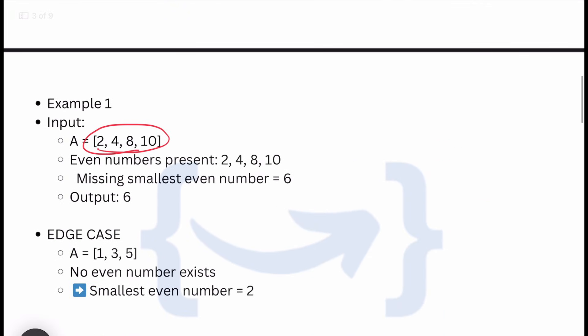This is straightforward. Looking at test cases: we have 2, 4, 8, 10 and the even numbers present are 2, 4, 8, 10. I can find that 6 is missing, which is the smallest, so 6 is the right answer. Edge case: 1, 3, 5 - no even numbers exist, so 2 is the smallest even number, and 2 is the right answer.